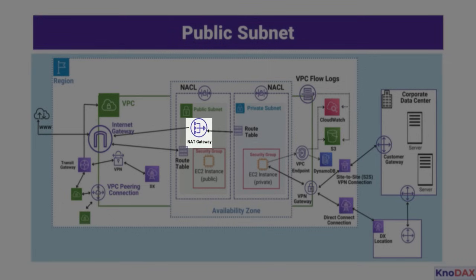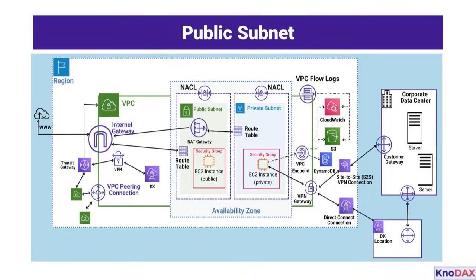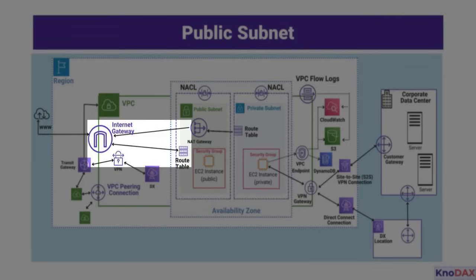In the public subnet, we have a NAT Gateway and an Internet Gateway, enabling Internet access for public-facing resources. An Internet Gateway associated with a public subnet means the route table will have a route directly pointing to the Internet Gateway, allowing resources in that subnet to access the Internet without needing a NAT Gateway.